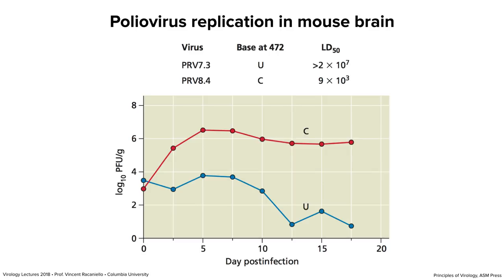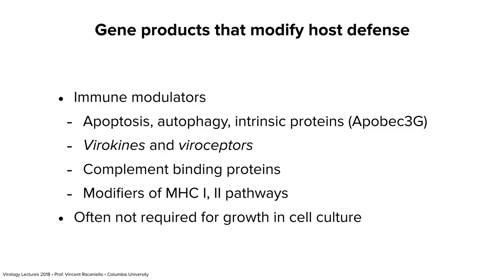The mutation also affects viral replication. In a growth curve, you inoculate intracerebrally, take a few mice at each time point, sacrifice them, take out the brain, grind it up, and measure virus replication by plaque assay as PFU per gram of brain. The virus with a C has a nice increase and plateaus out — replicating very nicely, consistent with the lethality. The virus with a U doesn't really replicate and is eventually cleared, and it doesn't paralyze.